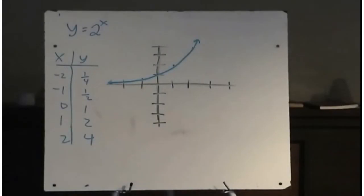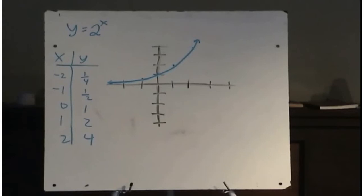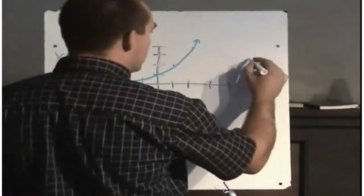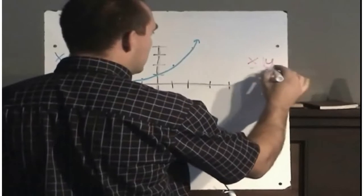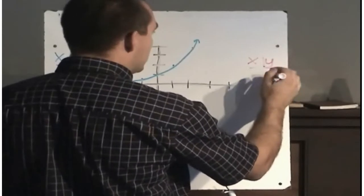We've looked at exponential functions now, and we did some transformations to our basic graphs like y equals 2 to the x. One transformation we haven't done yet is its inverse. Remember, the inverse is when you switch the x and y values. So what if we were to do that — what if we were to switch x and y?